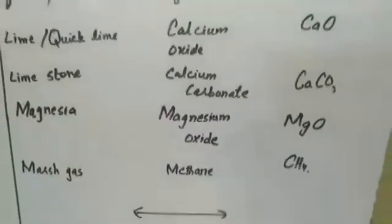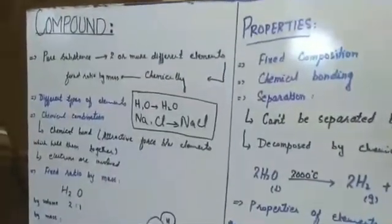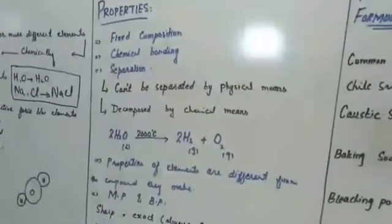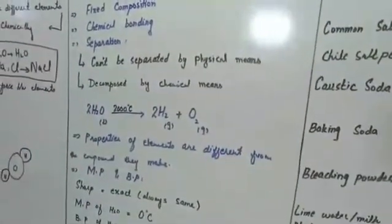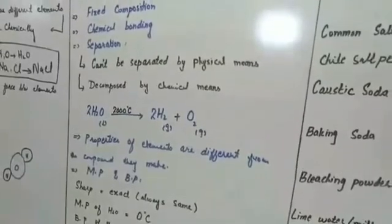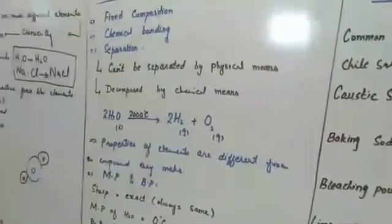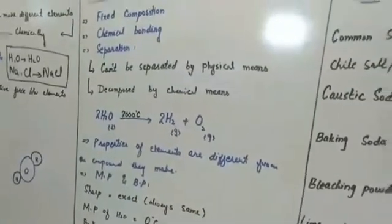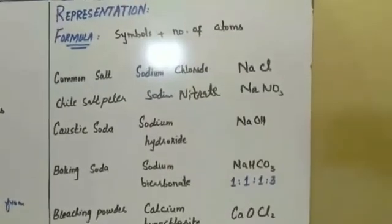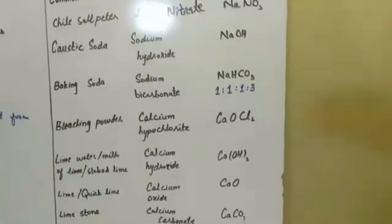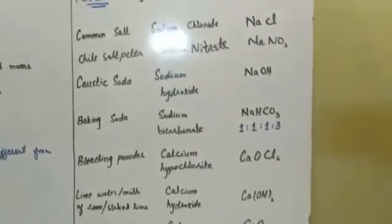So today we discussed compounds — what a compound is: the combination of two or more elements through chemical combination. We discussed the properties: sharp melting and boiling points, compounds cannot be broken down easily and require chemical procedures for decomposition. We also covered common names, chemical names, and formulas of certain common compounds. For example, Chile saltpeter has the formula NaNO3. I hope this will help you.